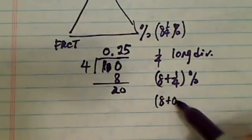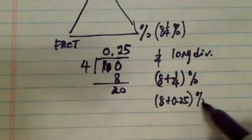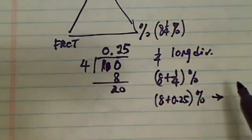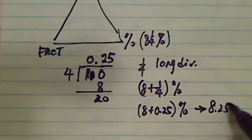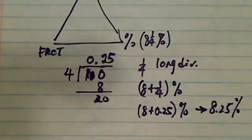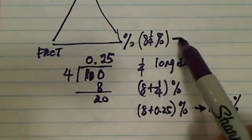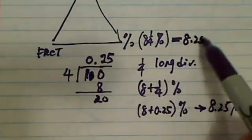So 8 plus 0.25%. So basically 8.25, what we really have is 8.25%. So far so good. So this is what we're given here, equal to 8.25%.